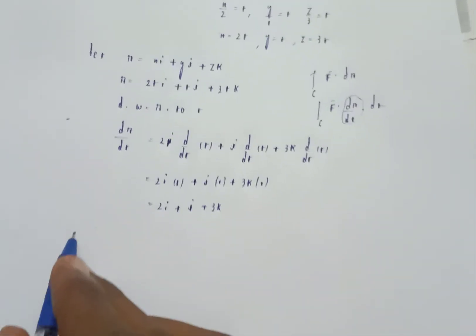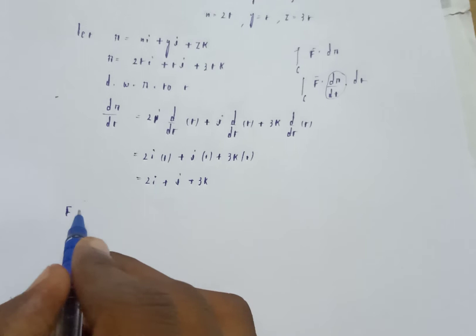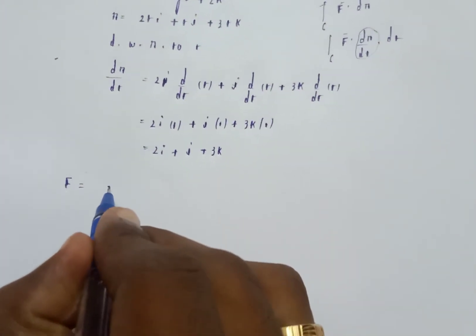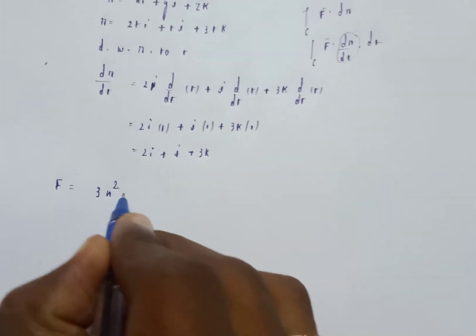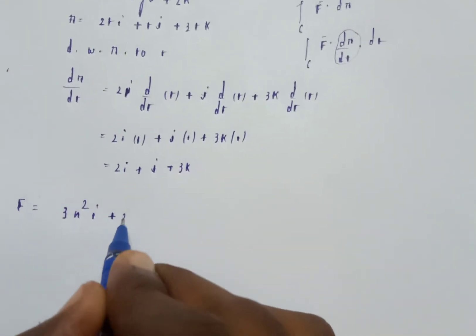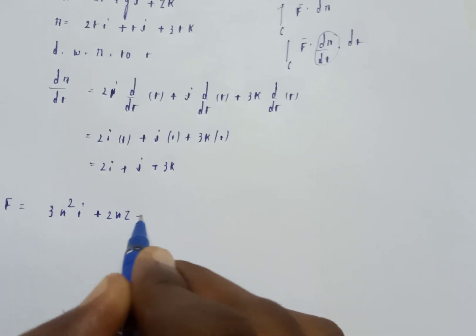Now we need F bar dot. F in this problem is 3x square i plus (2xz minus y) of j plus zk.